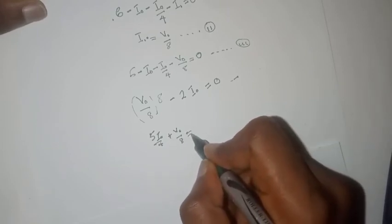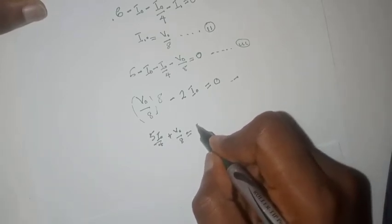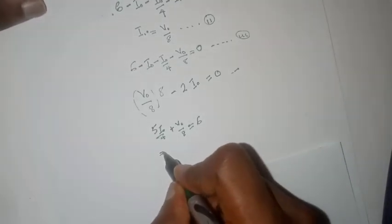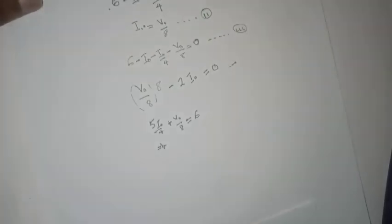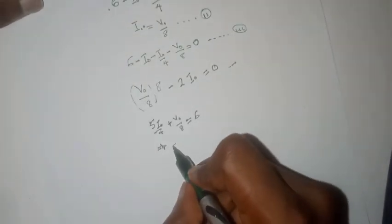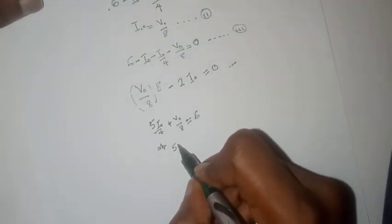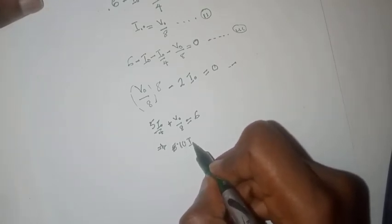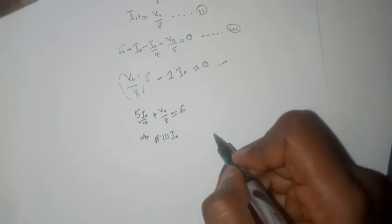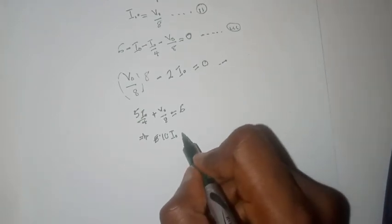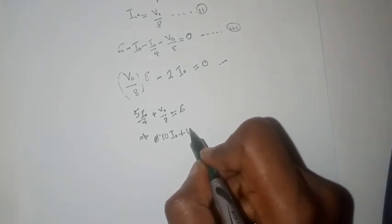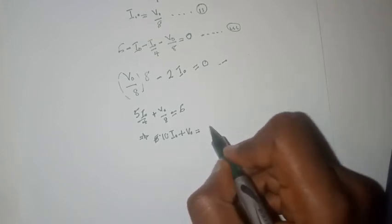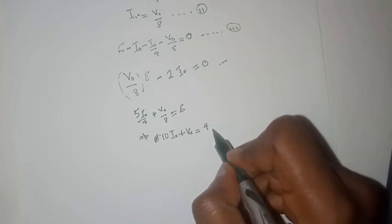Plus is equals to 6. Which can be further simplified as 10 I0 plus V0 equals 48.